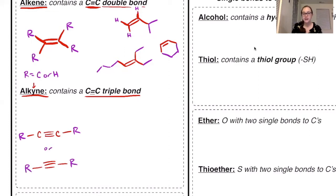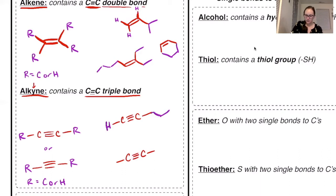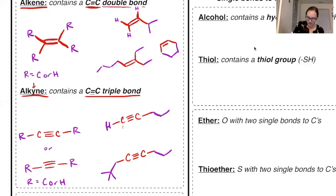I like to draw in those carbons on alkynes just to remind myself where they are, though it's not necessary. R can equal carbon or hydrogen. For example, you could have a hydrogen on one side and a carbon chain on the other, or carbon chains on both sides. When numbering alkynes, be careful not to skip any carbons — count carefully along the chain. We'll talk more specifically about these in the next few sections.